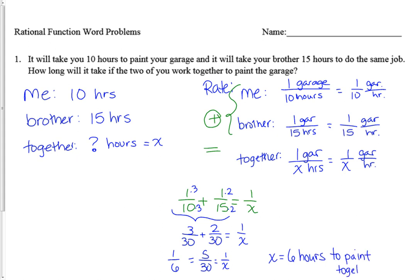My recommendation when you think you're done is to go back and ask: does this make sense? If it took me ten hours and my brother fifteen hours and we work together, it should take less time than it took each of us individually. And that's what I got — six hours. So that seems pretty good. Let's go on to the next problem.